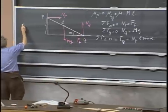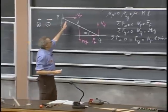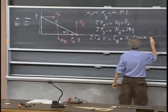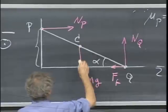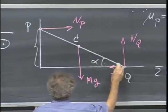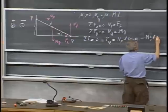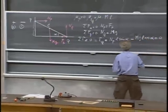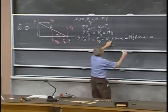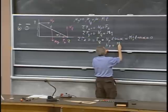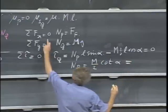The torque from N_P is into the blackboard, so positive. The torque from Mg is negative. The position vector for Mg gives one-half L cosine alpha times Mg. Setting the sum to zero: N_P times L sine alpha minus Mg times one-half L cosine alpha equals zero. Solving, N_P equals M times g divided by two times the cotangent of alpha, and that must equal the frictional force.